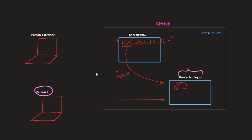After person2 has copied the complete source code, he can make all the required changes. Then he can simply request the owner of the original repository to update the source code with those changes. This kind of request is called a pull request. The owner can review and update the code with the desired changes if he thinks they are good. This is the complete workflow of how GitHub collaboration works.